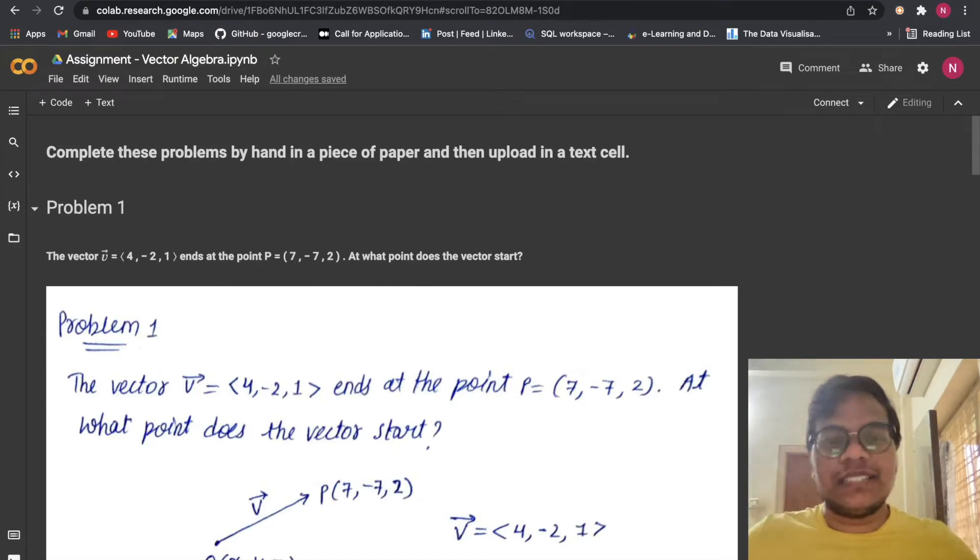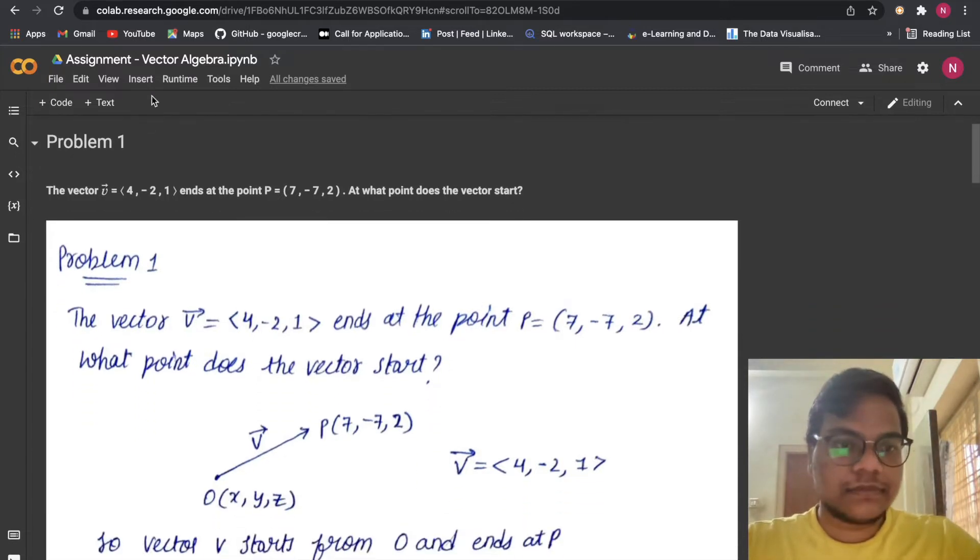Hello soldiers, in this video we are going to solve AlmaBetter's Module 3, Mathematics for Machine Learning Assignment 2, and the topic is vector algebra. The first problem is: the vector v̄ = (4, -2, 1)...